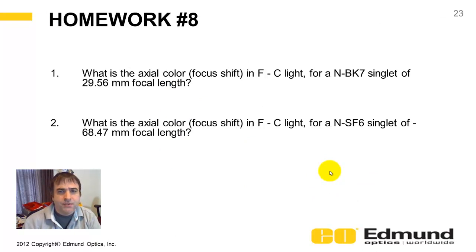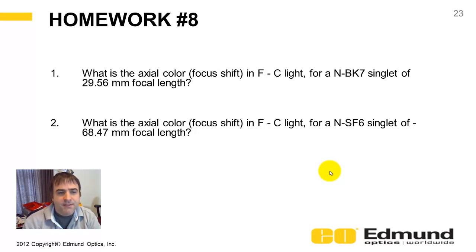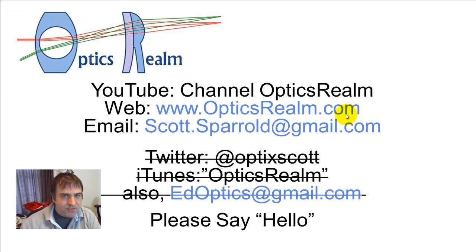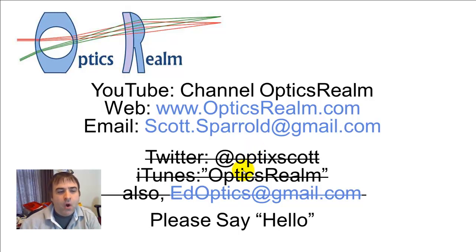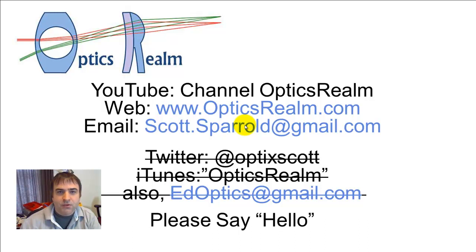For homework, calculate the change in focal length from F to C light in a flint glass (SF6) and a crown glass (BK7). We'll be referring back to this example later. Thanks for tuning in. You can email me or visit my blog at opticsrealm.com. Homework solutions are posted to the website — I've buried the links a bit because I'd like you to try them first. Thanks for tuning in, and please subscribe to my YouTube channel.